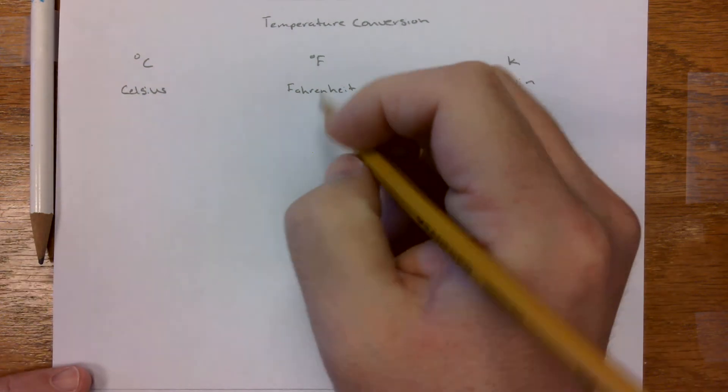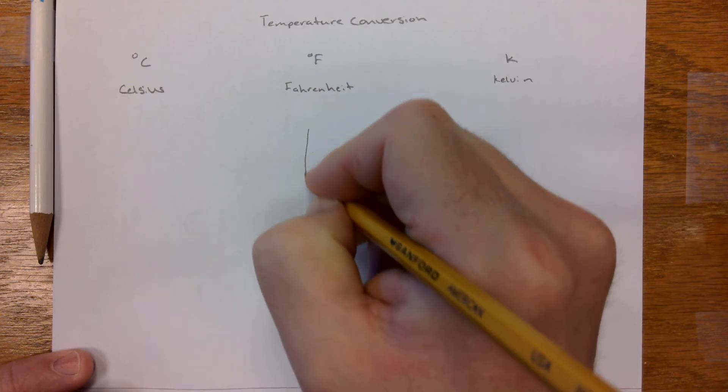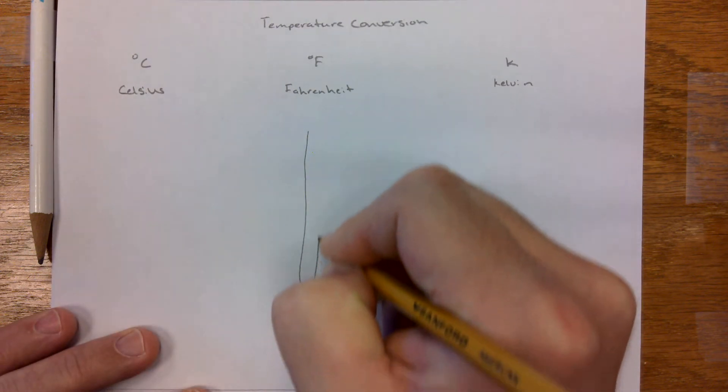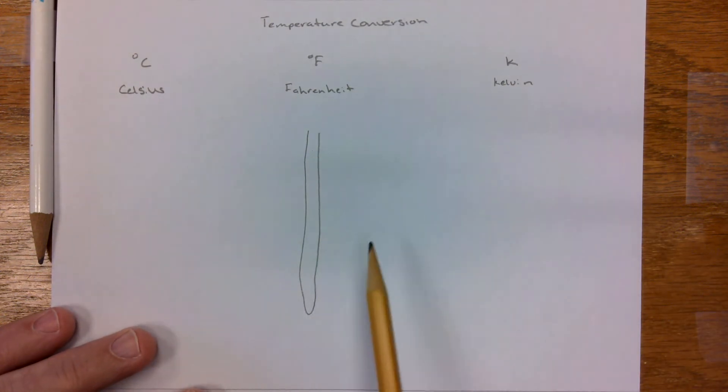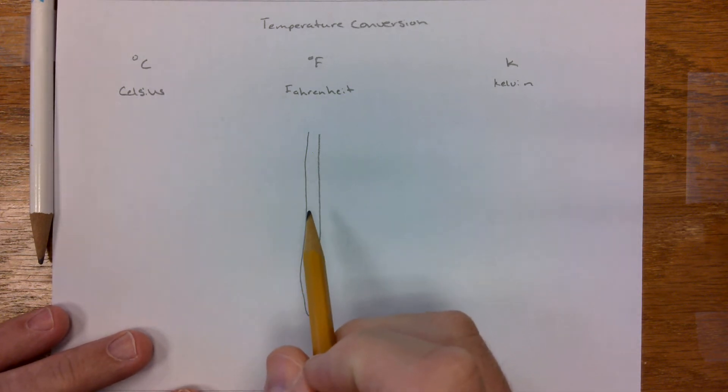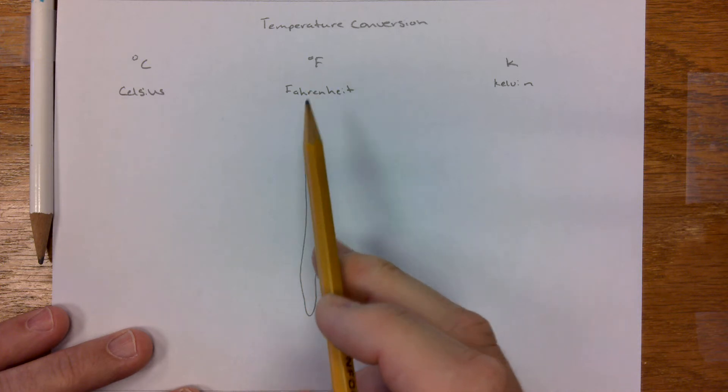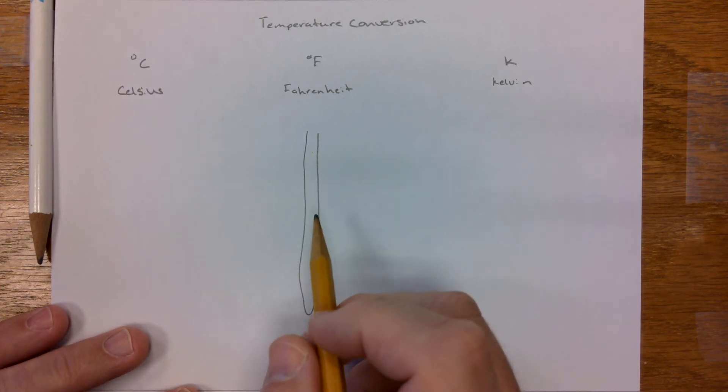On these scales, we're going to start with Fahrenheit. There's a reason why we're starting with Fahrenheit, and it's not because I'm American. It's because Fahrenheit made his thermometer from Olas Rimmer. Olas Rimmer had an alcohol thermometer, but Fahrenheit made his much more accurate by using mercury.